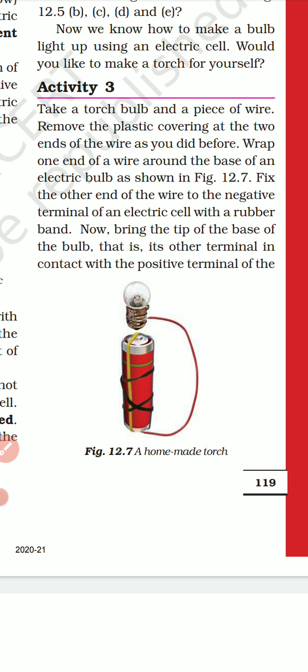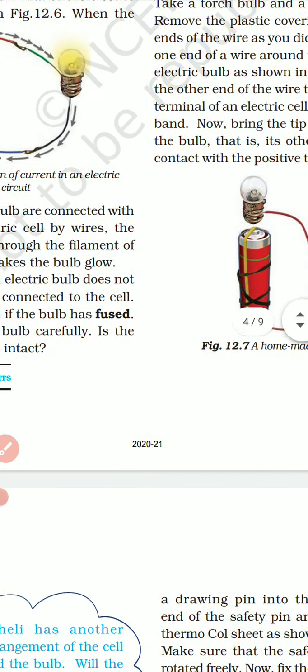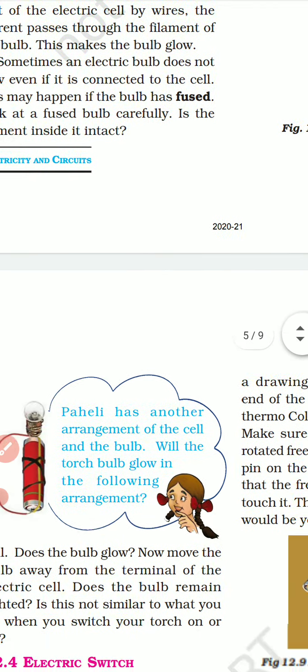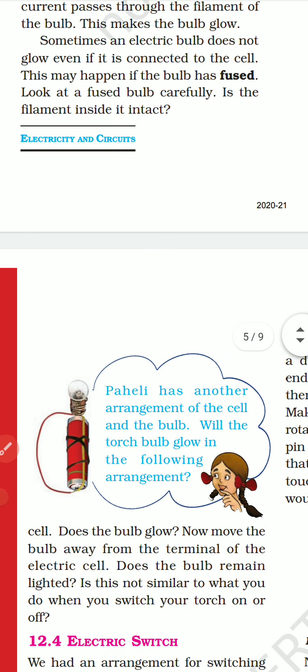Wrap one end around the electric cell and fix the other end of the electric cell with a rubber band. Now, bring the tip of the base of the bulb — that is, its other terminal — in contact with the positive terminal of the cell.